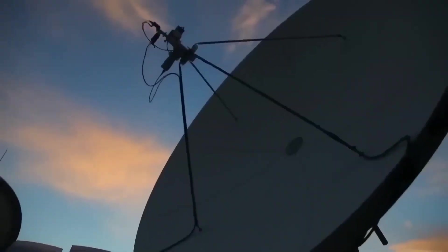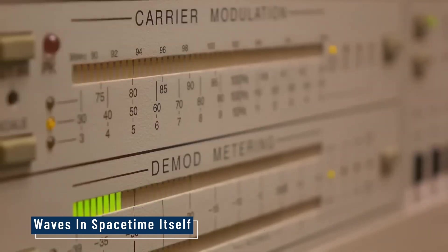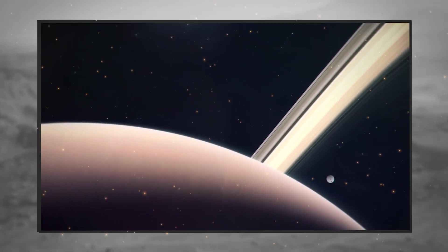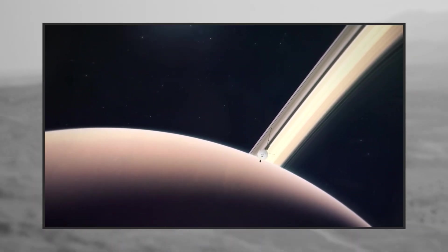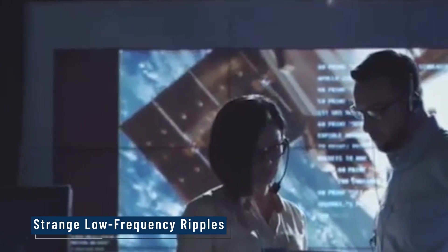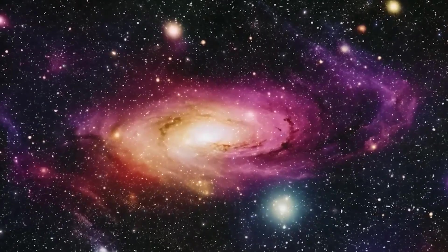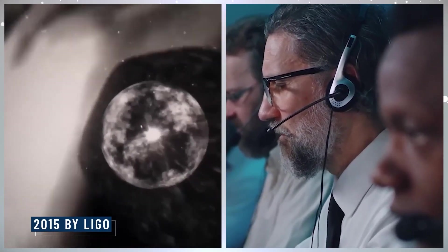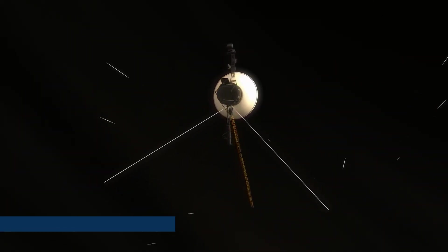And deep in that storm, Voyager picked up something even stranger: ripples. But not in sound or light. These were waves in space-time itself. And if confirmed, it means Voyager is doing something no probe has done before, detecting the tremors of distant, invisible giants. Gravity waves in the void. Voyager's journey isn't just about location, it's about listening. And in recent years, scientists have begun noticing strange, low-frequency ripples in its data. These aren't magnetic, they aren't light. They're distortions in space itself. Gravitational waves, the kind created when black holes collide or massive stars explode. Gravitational waves were first confirmed in 2015 by LIGO.